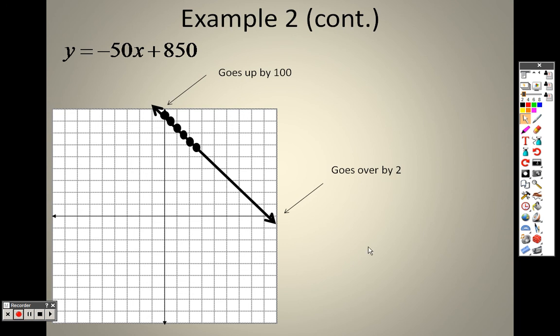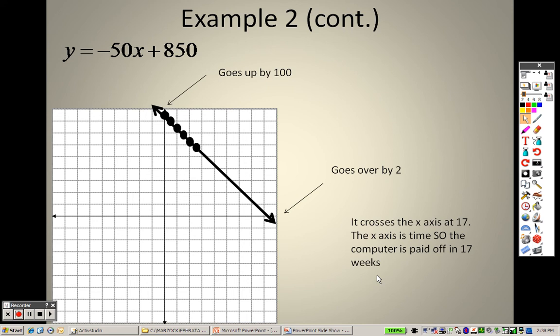So we want to figure out when we get this all paid off. We're going to get it paid off when it obviously gets down to the bottom. It crosses the x-axis at 17. The x-axis is time, so the computer will be paid off in 17 weeks. So yes, it will be paid off in 17 weeks because it's going to cross at 17. 2, 4, 6, 8, 10, 12, 14, 16, and about 17 is where it crosses.